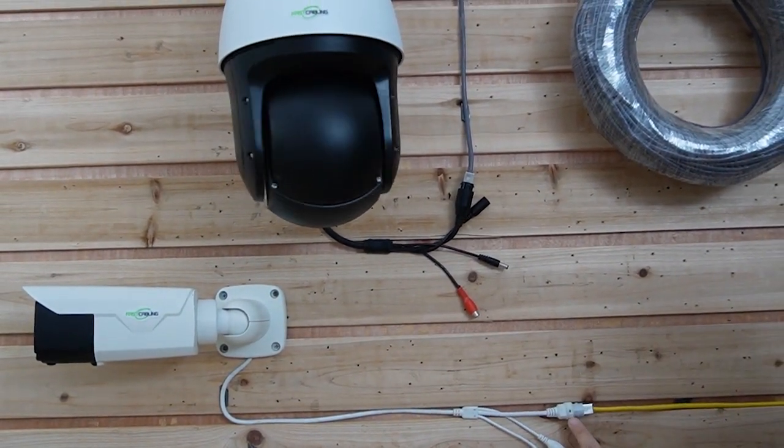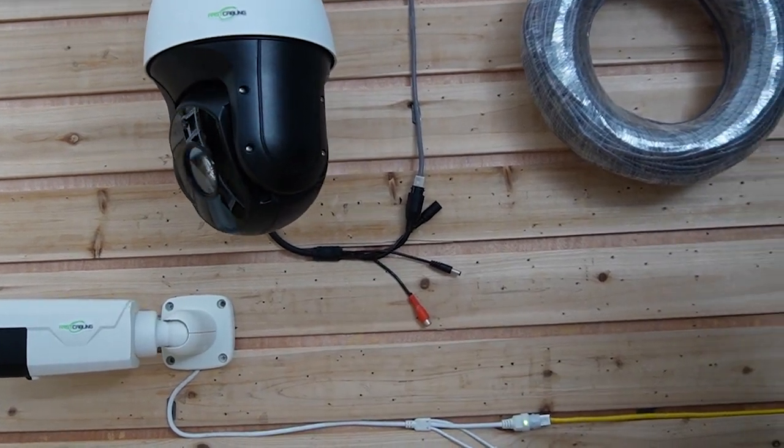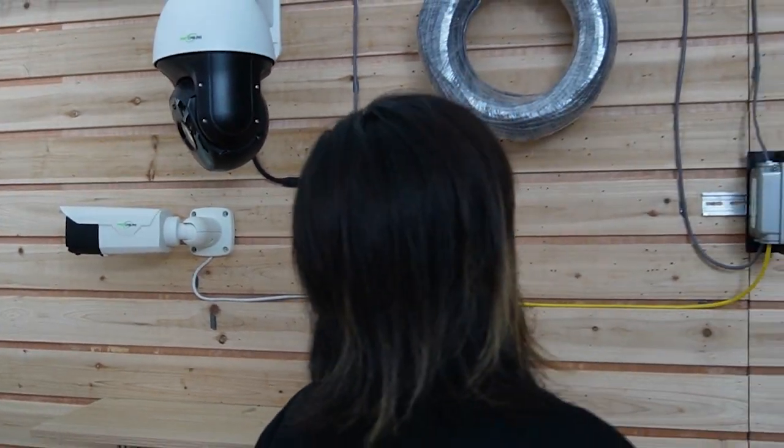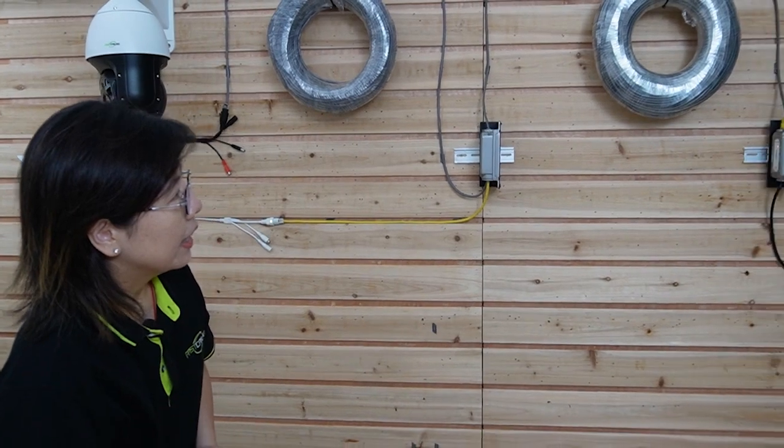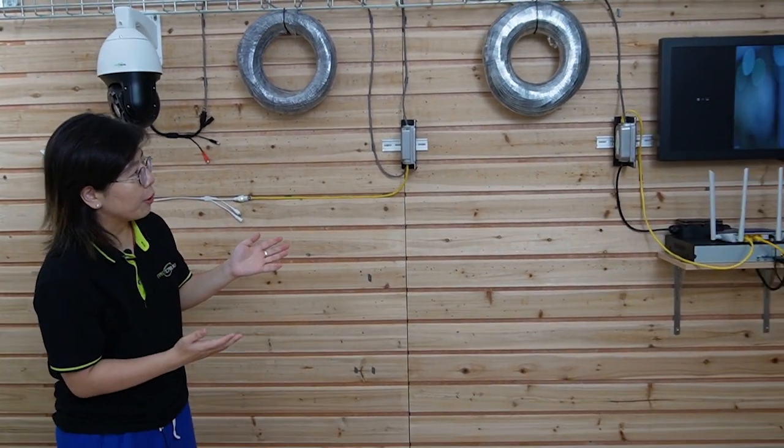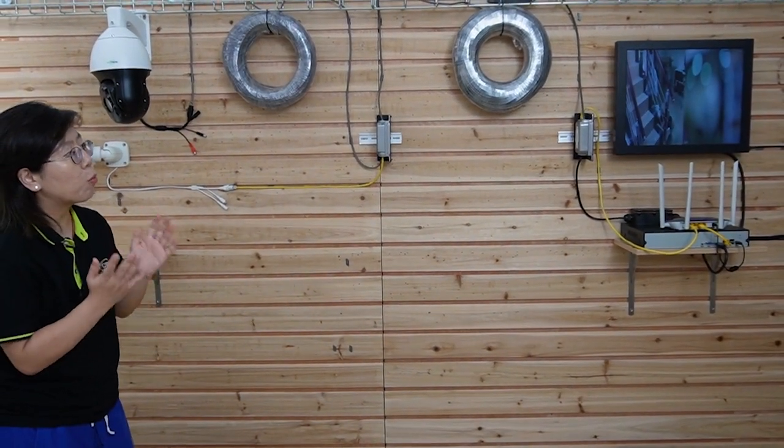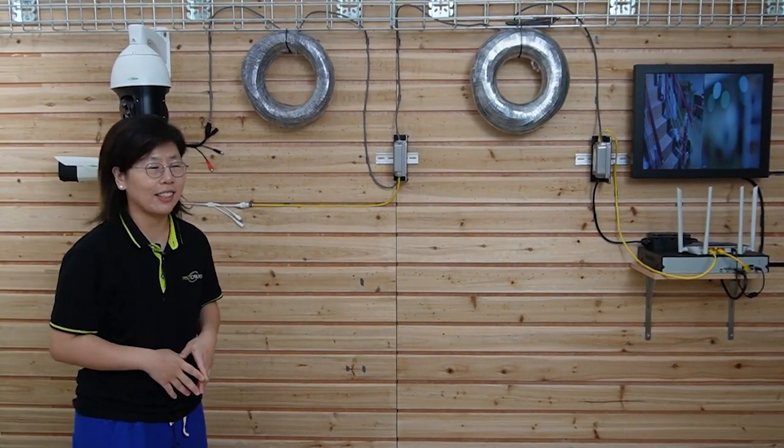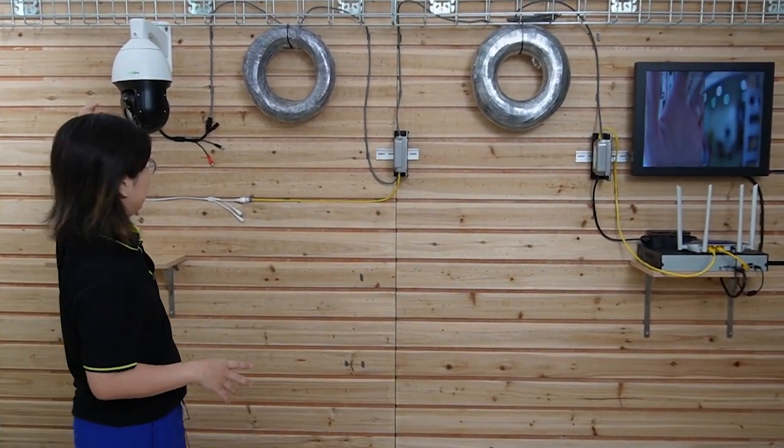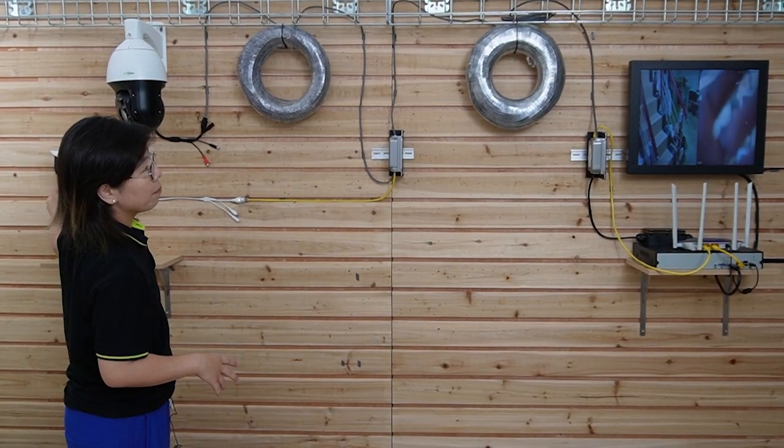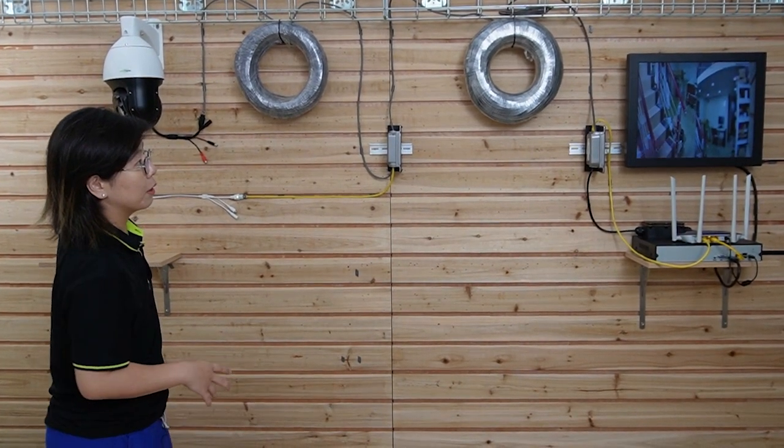And we are connecting the 100 meters Ethernet cable to the PTZ camera. As you can see, the indicator light is on. They're both getting power and data at the same time. And also the video is showing up on our monitor. I'm going to wave my hand to show you this is a live video. This is the PTZ and the bullet camera. The bullet camera needs a little bit of time to adjust the focus. So the whole connection is pretty simple.